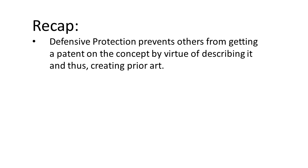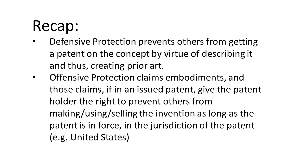To recap: defensive protection prevents others from getting a patent on your concept or invention by virtue of describing it and thus creating prior art. Offensive protection claims embodiments, and those claims — if in an issued patent — give the patent holder the right to prevent others from making, using, or selling the invention as long as the patent is enforced in the jurisdiction of the patent, in this case the United States. Hopefully this helped further understand the types of protection patents can offer. Thanks for checking out this episode of Inventors Quick Tips and we hope to see you again soon.